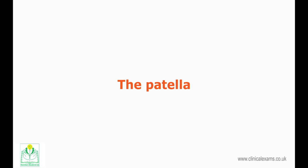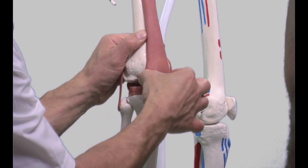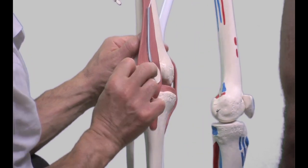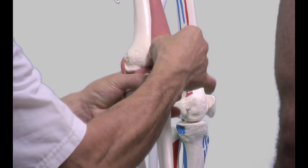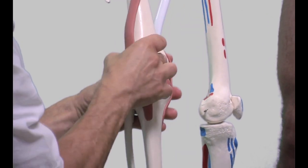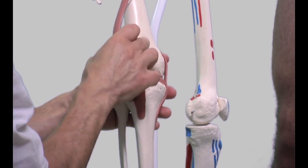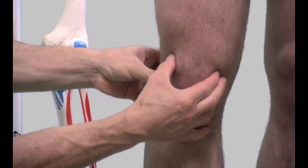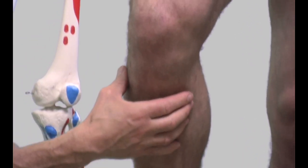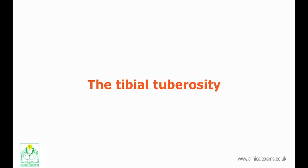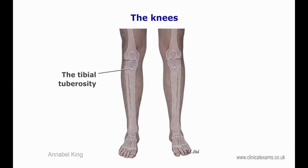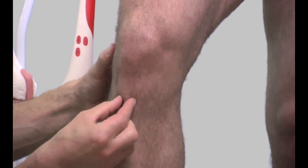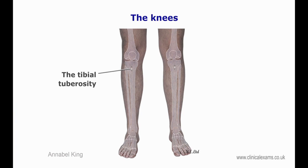The patella is a sesamoid bone that provides attachments for the quadriceps muscles above and the patella ligament below. When the knee is held in extension, it is mostly situated over the femur in the trochlea between the lateral and medial ridges. The patella is broadened superiorly with a slightly convex superior border, but pointed and narrower at its inferior margin. It is easily mobile when the knee is extended, but rigid when the knee is in flexion. The tibial tuberosity is a large rounded protrusion on the proximal anterior aspect of the tibia, in line with the patella, forming the attachment of the patella ligament. It is more palpable when the knee is flexed.